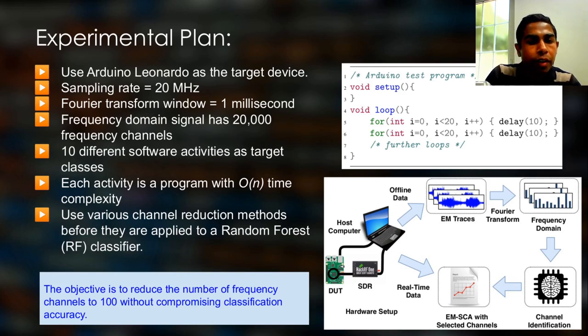Each of these software activities are arbitrary programs. We use 10 different programs with a time complexity of big O n. So that means all these programs has the same computational complexity, but they have different code execution paths. Our objective is to reduce the number of frequency channels in the EM data set from 20,000 channels to a considerably less number without compromising the classification accuracy.